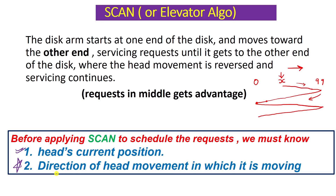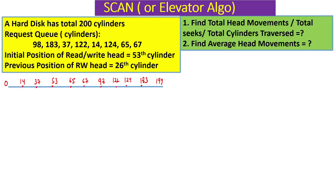Let's apply this algorithm with an example. We have a hard disk with 200 cylinders, numbered 0 to 199. The request queue contains cylinder numbers: 98, 183, 37, 122, 14, 124, 65, 67. The initial position of the read/write head is cylinder 53, and the previous position was cylinder 26.